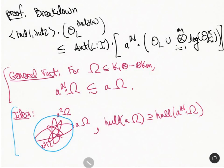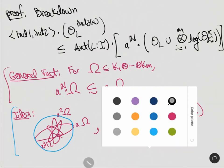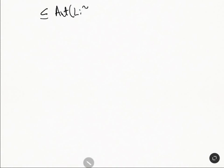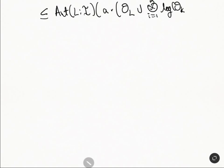This allows us to replace a^n by just a single a. So this comes down and we have that this is contained in out-l-i, a·OL, union tensor product i equals 1 to m of log OKi cross.